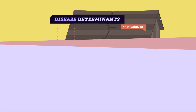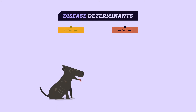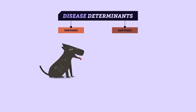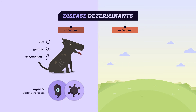These factors are called disease determinants because they determine whether a disease occurs in a population. Determinants can be classified as intrinsic or extrinsic. Intrinsic determinants include characteristics of the host such as age, gender, and vaccination status. The agents that cause disease are also intrinsic factors.